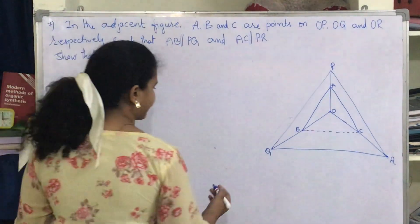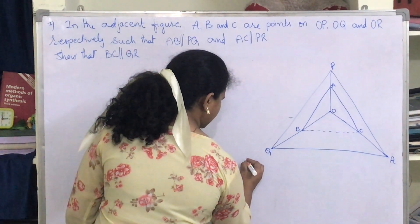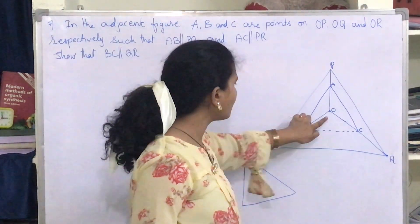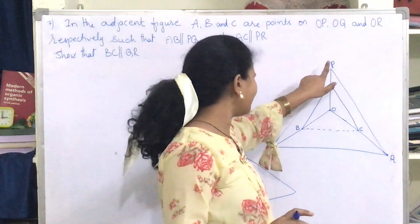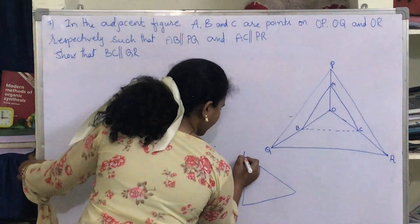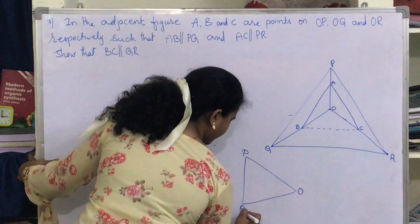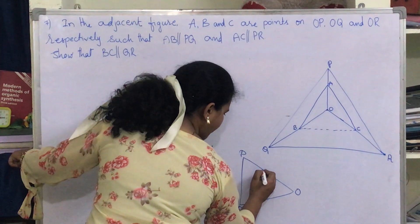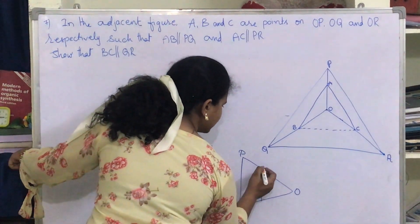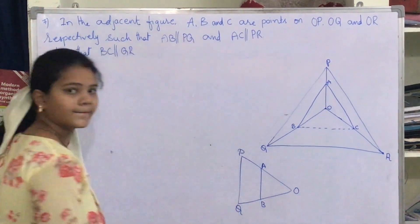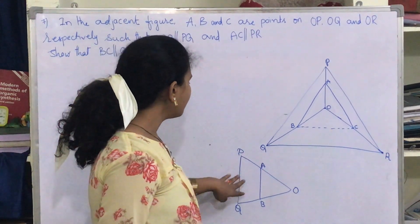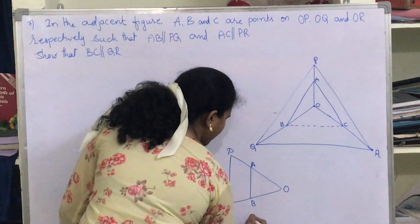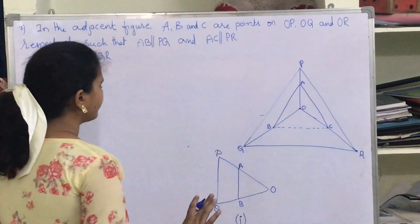Let me draw two triangles. So let this be triangle POQ — here I have taken triangle POQ where P, O and Q are the vertices. I have drawn a parallel line inside it; let this parallel line be AB. So AB is parallel to PQ — this is the first triangle.